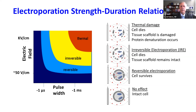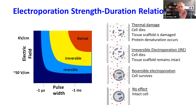Regarding tissue heating — we described pulsed field ablation as a non-thermal approach. The observation in most settings is that if there is any temperature rise, it's in very close proximity to the electrode and is usually in the range of just a few degrees.